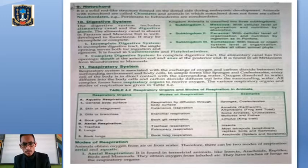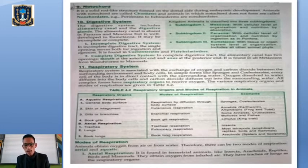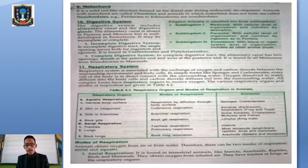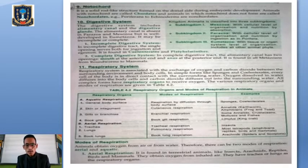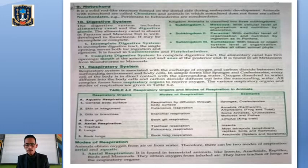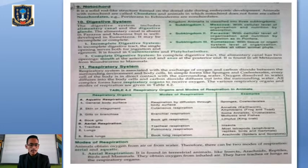We also classify based on digestive systems: complete and incomplete. An incomplete digestive system has only a single opening through which food is both ingested and excreted — seen in Coelenterates and Platyhelminthes. A complete digestive system has two openings: a mouth at the anterior end for ingesting food and an anus at the posterior end for removal of waste materials.